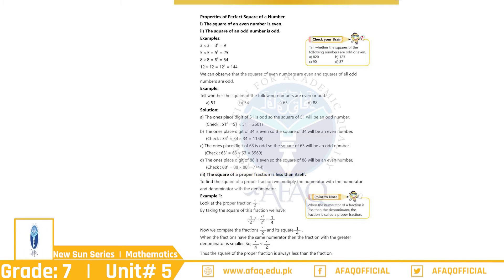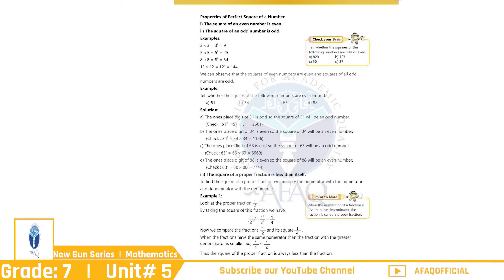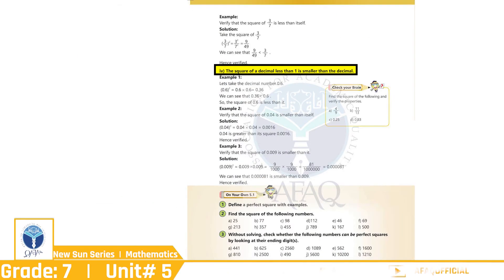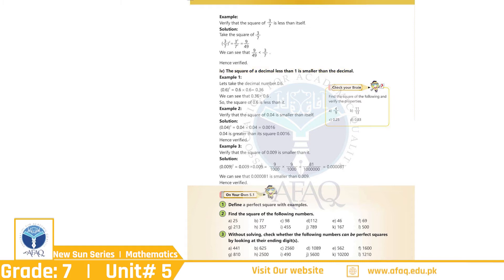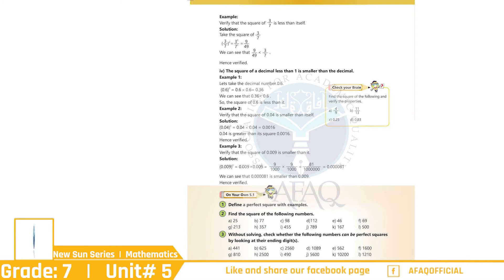بچو، اس کا مطلب ہے کہ کسی بھی Proper Fraction کا اگر square لیا جائے گا تو یہ اپنے نمبر سے کم مقدار میں حاصل ہو گا۔ 4. The Square of a Decimal Less Than One is Smaller Than the Decimal. یعنی ایک سے کم والے decimal کا square اپنے نمبر سے کم value بنائے گا۔